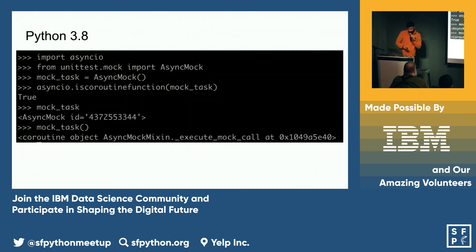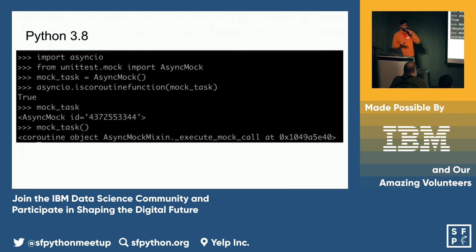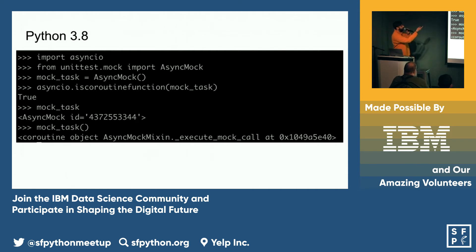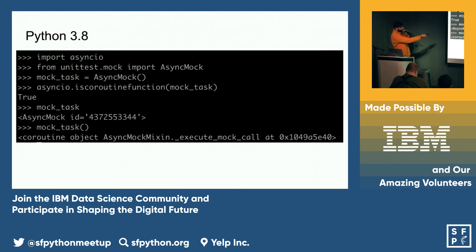Finally, the Python 3 core community recognized this need and added an AsyncMock object that you can import from unittest. You can do something like: from unittest.mock import AsyncMock. You can initialize an object and it's actually a coroutine — if you try to call it, it returns a proper coroutine object, so you don't need to do any of those workarounds.